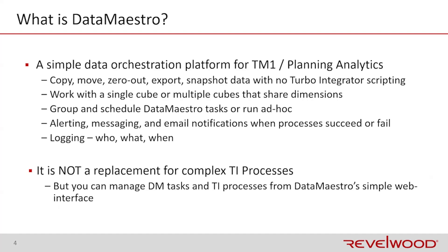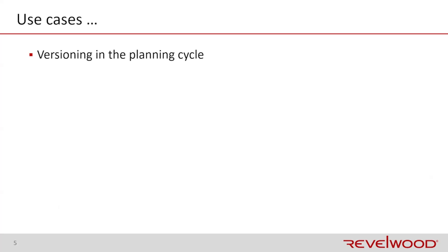What are some of the use cases? We have the ability to do versioning. Maybe we're going to precede a budget, or maybe we're going to be creating monthly forecasts. By creating all these independent versions, I need the opportunity to grab data from one point and replicate it into another. We also have the ability to do snapshots. Oftentimes we're going to be in a two-, three-, four-month budget cycle, or running a repeated forecast, giving us the ability to replicate that data. Customers want to do the equivalent of a save-as — in Excel we often call that a snapshot.